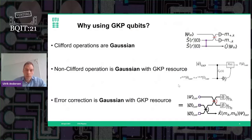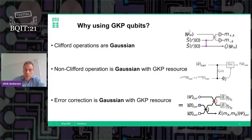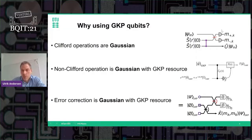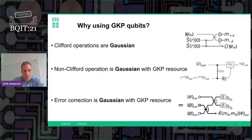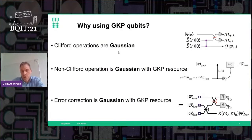So why do we use the GKP qubit? First of all, all the Clifford operations — single-mode and two-mode Clifford operations — are Gaussian. A circuit example is shown on the top right where we demonstrate that you can implement single and two-mode gates using teleportation: you start with a two-mode squeezed state, combine one half of the entangled state with the input state in a joint continuous-variable Bell measurement, performing two homodyne measurements. Depending on the measurement setting, you implement different gates onto your state, realizing an arbitrary single-mode Gaussian gate. This can be extended to two-mode and higher-order mode transformations.